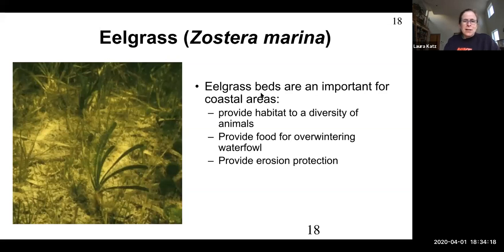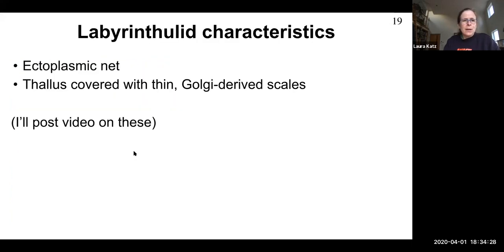In the 1950s, I think again in the 70s, this organism called labyrintholid basically ate all the eelgrass, destroyed all the eelgrass in marine environments, which killed all the clams and mussels, which had a big impact on the animals, the larger animals above in the food chain. So this is an eelgrass bed. And these things are really important for a diversity of animals, waterfowl overwintering, and they also prevent erosion, but they were destroyed by these labyrintholids. What are the labyrintholids? They literally make an ectoplasmic net.